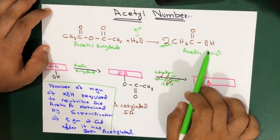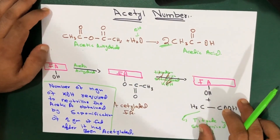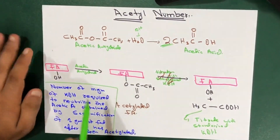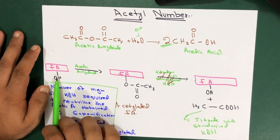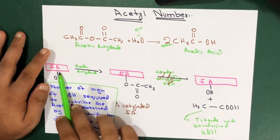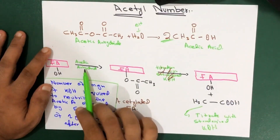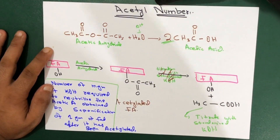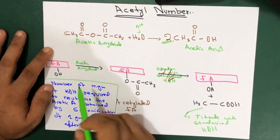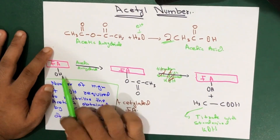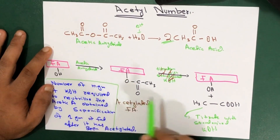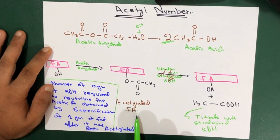I want to show a picture of Acetic Acid and Acetic Anhydride. Now coming to understanding the real definition — look at this picture. We have a fatty acid over here which has an OH group. When this fatty acid is put into Acetic Anhydride, this OH group actually reacts, and we get this — the Acetylated fatty acid.